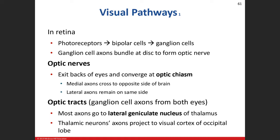As light enters into your eye, it's going to travel through the cornea, through the aqueous humor, then through the pupil, then pass through the lens, travel through the vitreous humor, and wind up in the retina — specifically the neural layer.